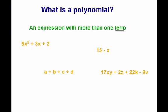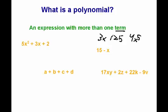A term is just part of an expression, like 3x is a term, and 25 is a term, and 4x to the 5th power — those are all terms. And if I add them together, now I have a polynomial, because it's an expression that has more than one term.